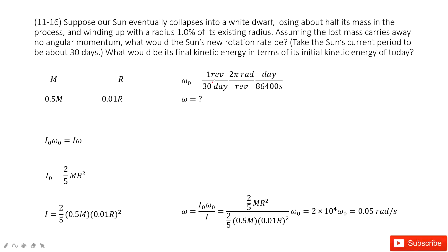Chapter 11 is about angular momentum. We have the Sun in the system. It eventually becomes a white dwarf. The Sun's mass is capital M, the radius is R.